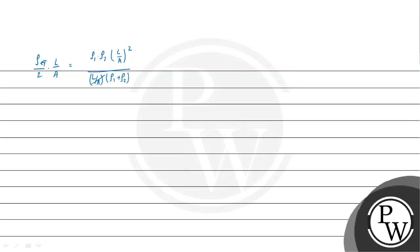Here, the L and A terms cancel out. So the remaining expression gives us rho equivalent. That will be equal to 2 times rho-1 times rho-2 divided by rho-1 plus rho-2.